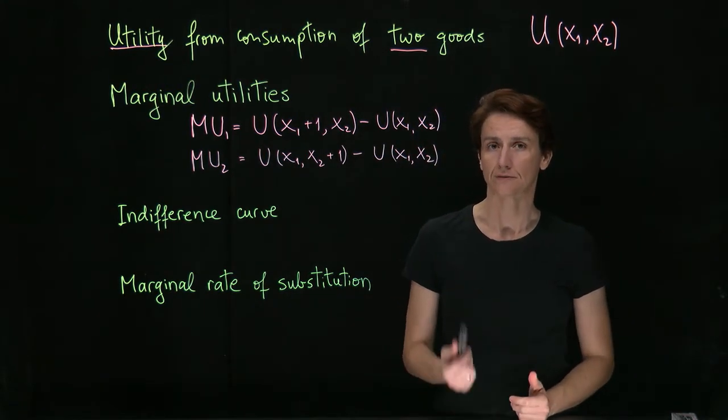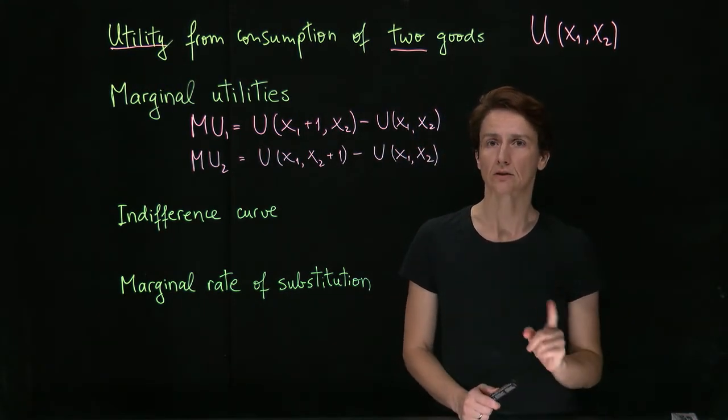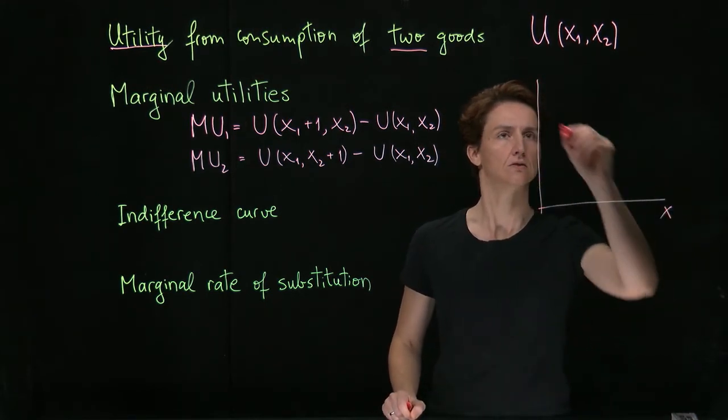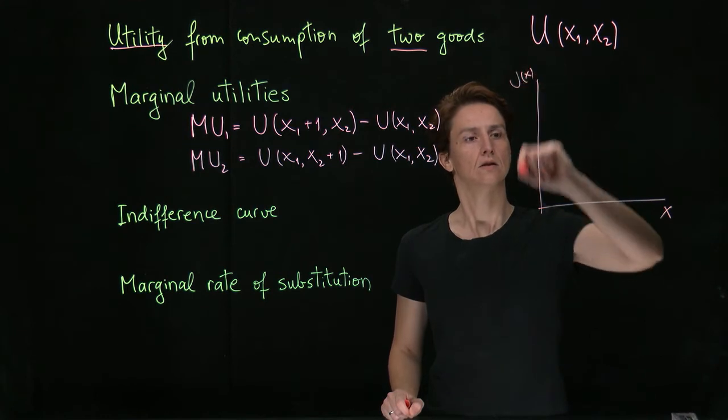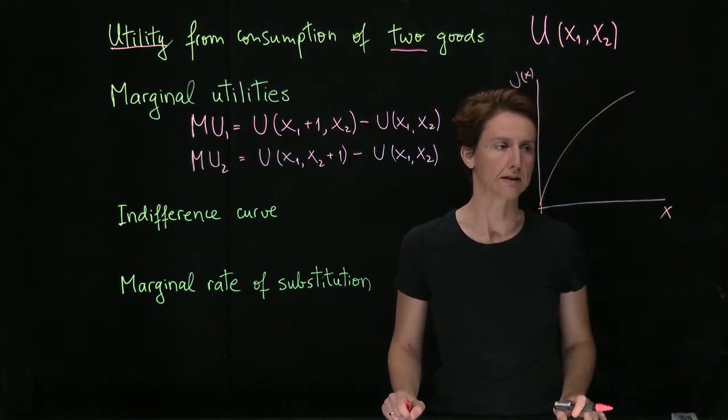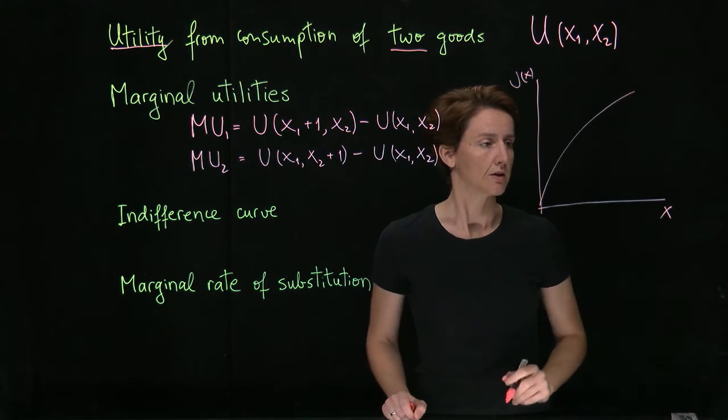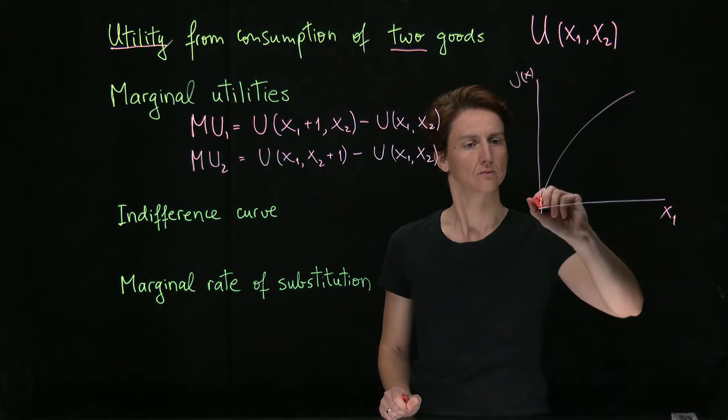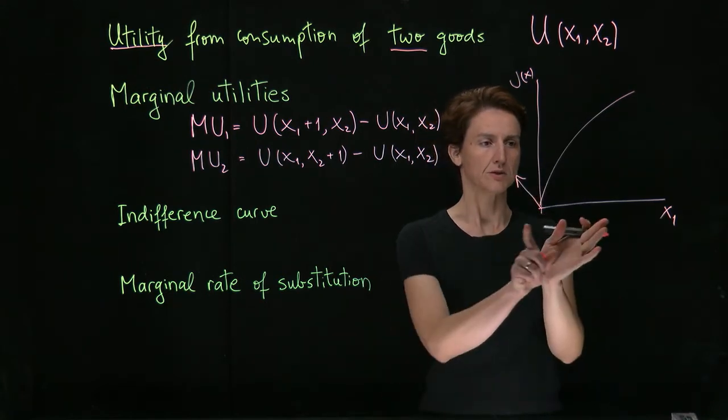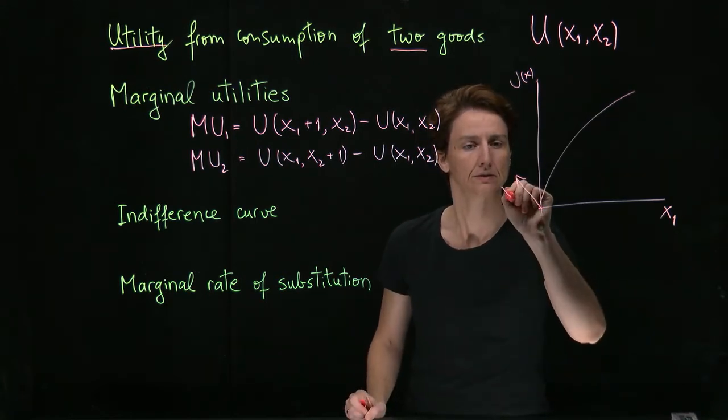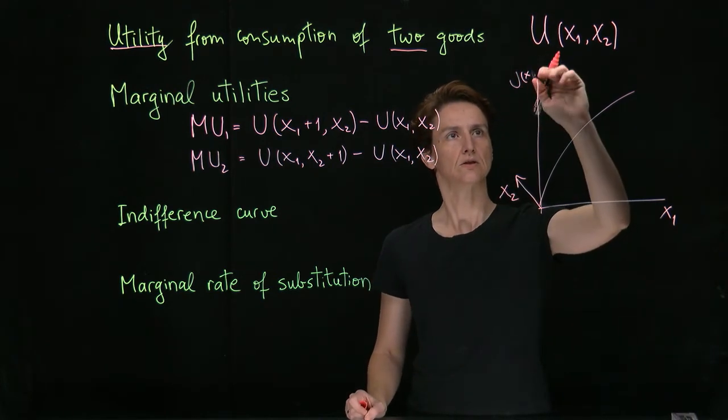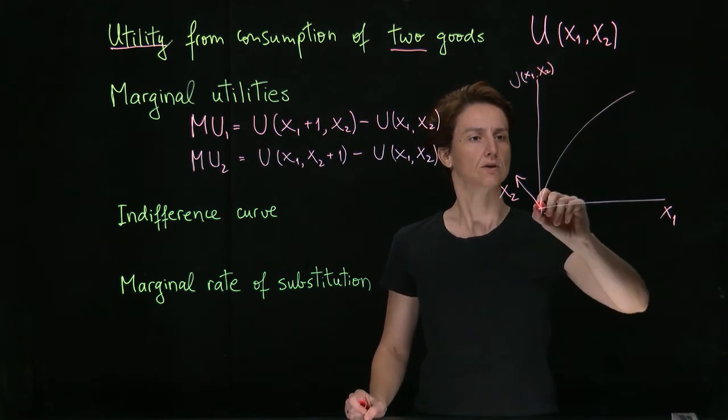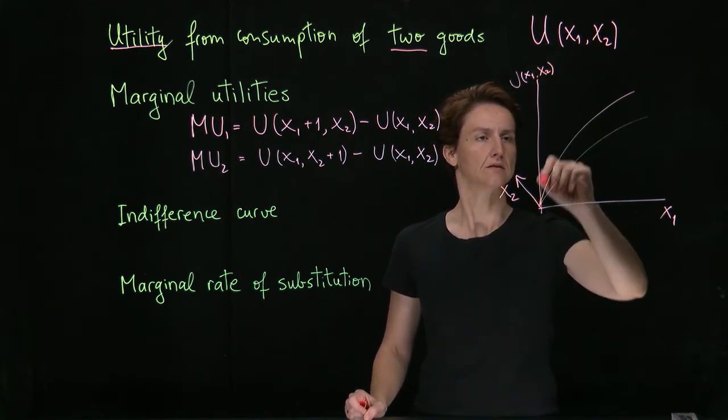Now we run into a difficulty. Remember, when we had utility of only one good, we were able to graph the utility function and see marginal utility in the graph and so on. But now that there are two goods, we would need an extra dimension. So if this is x1, we would need to also have some dimension that goes into the board with x2. And now utility would depend on both coordinates and would actually be a plane. That's fairly difficult to graph or to think about.